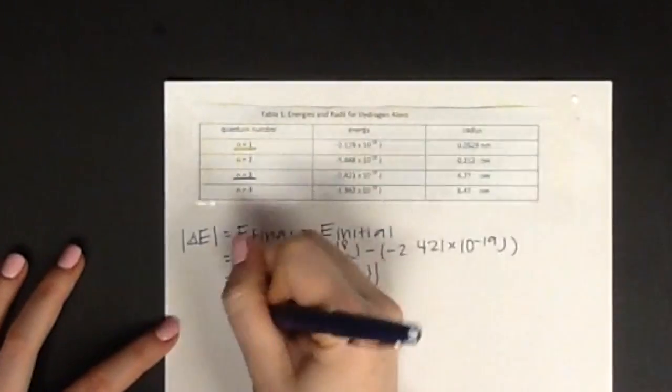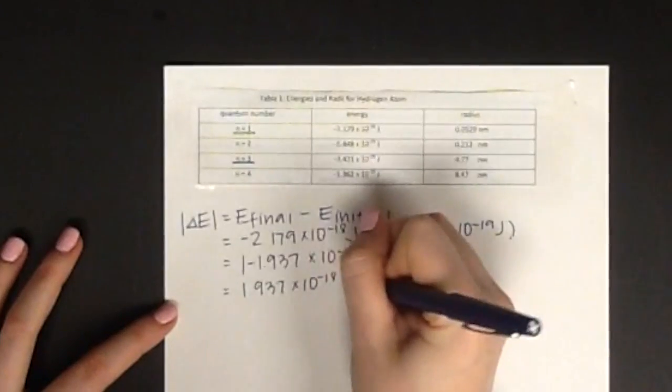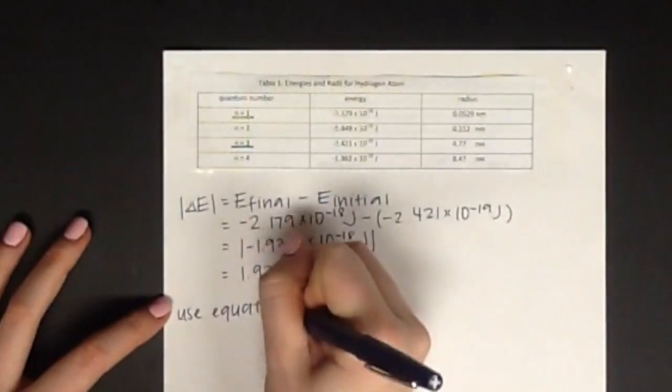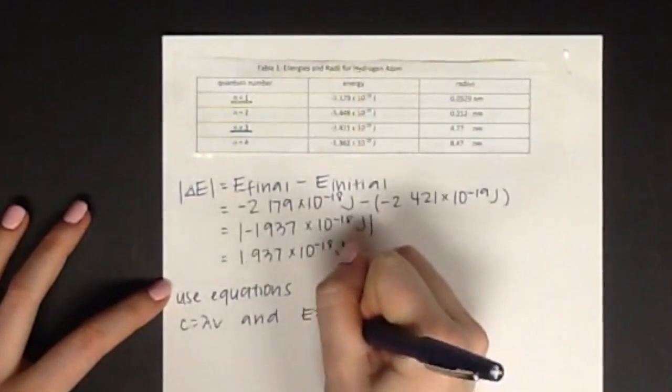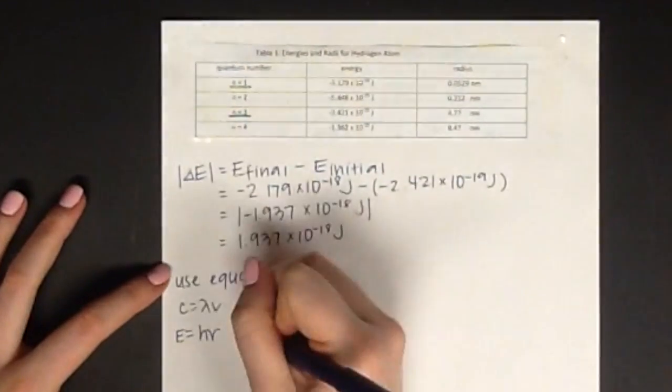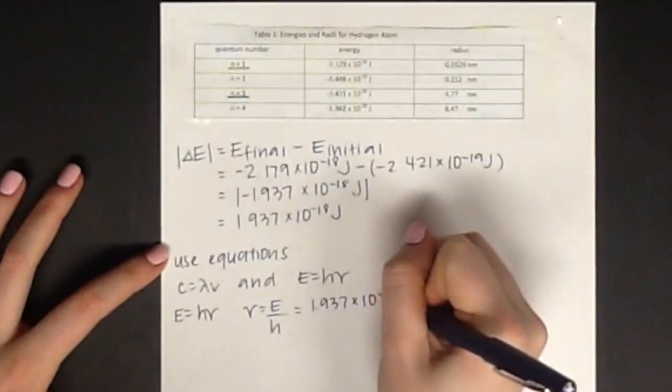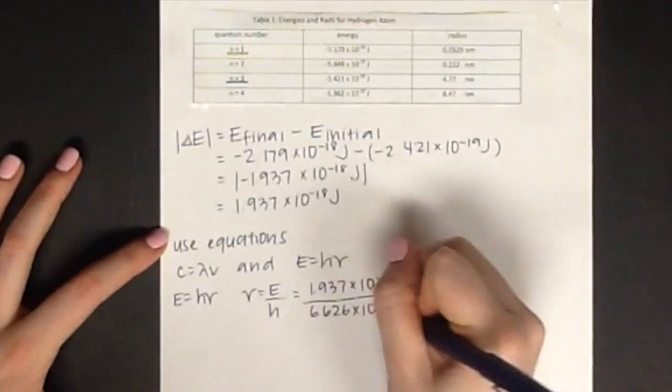Next, we use the equation c equals lambda times frequency and e equals h times frequency. Let's first use the e equals h times frequency and rearrange to solve for frequency. This leaves us with frequency equals energy over h. Energy is the value we got from above. H is Planck's constant. For frequency, we get the value of 2.923 times 10 to the 15th hertz.